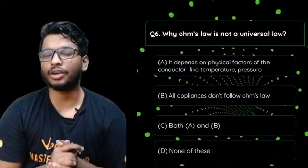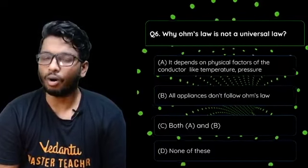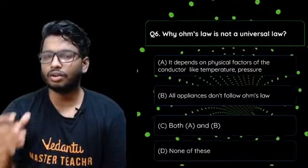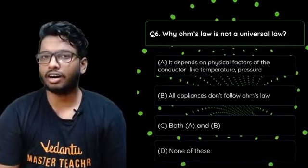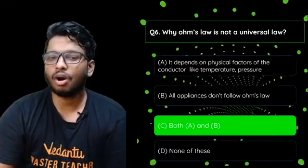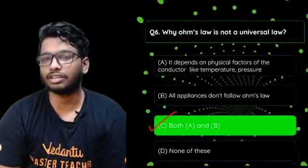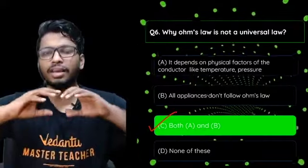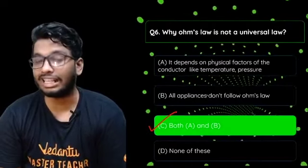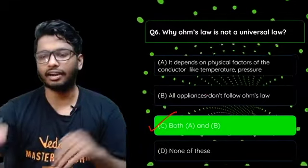Last question: why is Ohm's Law not a universal law? Is it (a) because it depends on physical factors like temperature and pressure, (b) because not all appliances follow Ohm's Law, (c) both A and B, or (d) none of these? The answer is option C — both. Ohm's Law is not applicable to semiconductors like silicon or to insulators. It also depends on external factors like temperature and pressure. When we say a universal law, it must be applicable to everything, and Ohm's Law is not, which is why it is not a universal law.